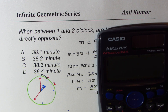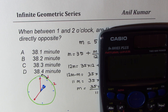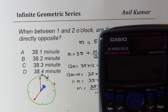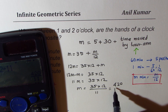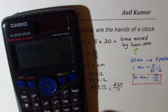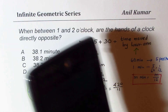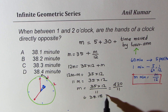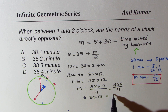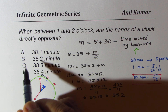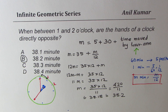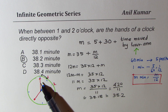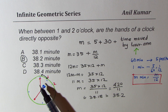The equation becomes m = 35 + m/12. Solving: 12m = 420 + m, so 11m = 420, giving m = 420/11. Calculating: 420 ÷ 11 ≈ 38.18, which rounds to 38.2 minutes. So option B is the correct answer.